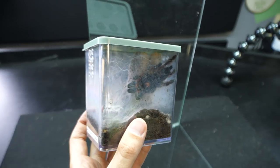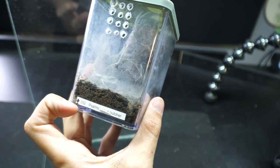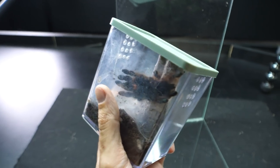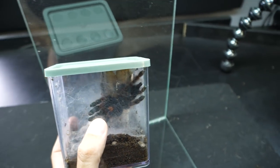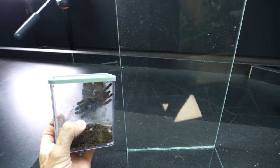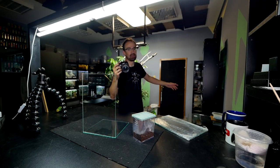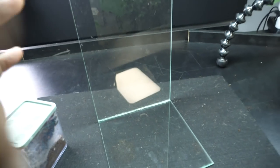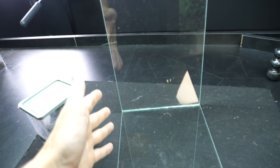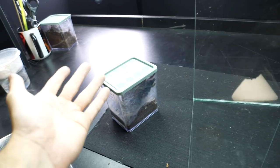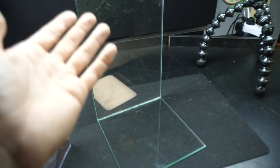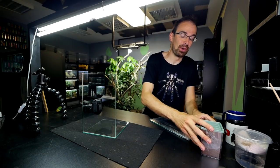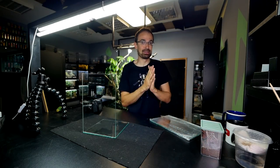And the tarantula that we are going to rehouse in this enclosure is going to be this Psalmopoeus species female, and she's still kind of maybe too small for this enclosure. She could easily fit the terrestrial enclosure set up as an arboreal one with less substrate. But having her in a regular sized arboreal enclosure won't be a problem because this in the end will be her permanent enclosure. And she will most likely stay in this enclosure for the entirety of her lifespan.